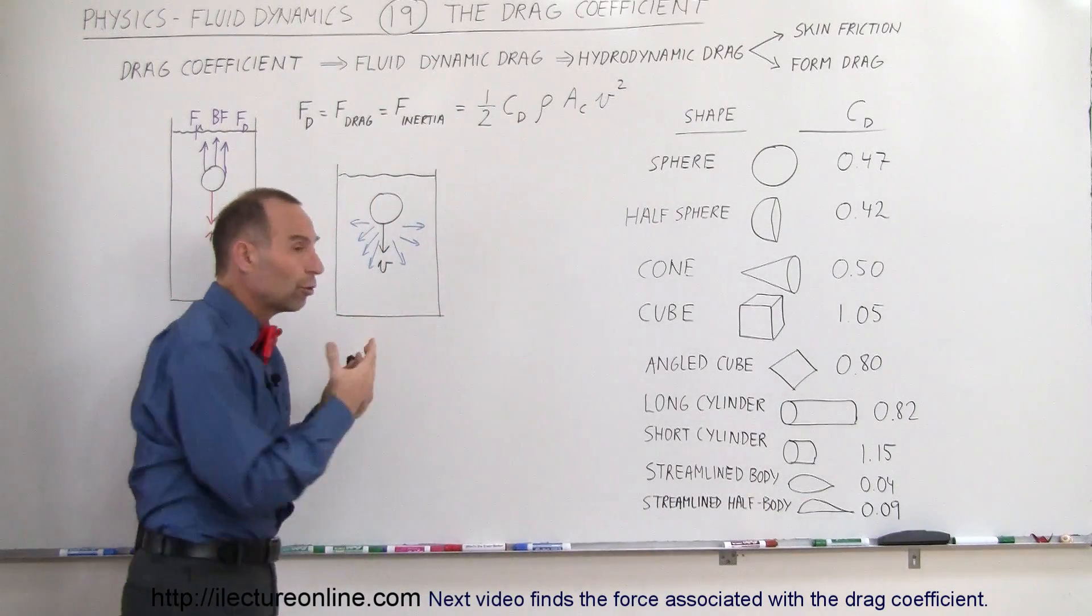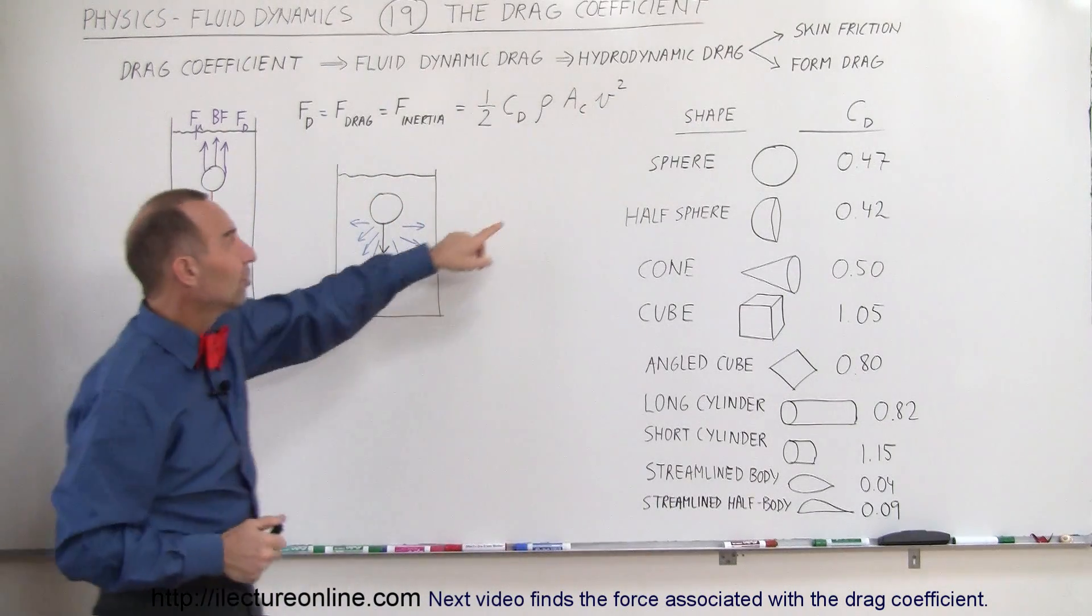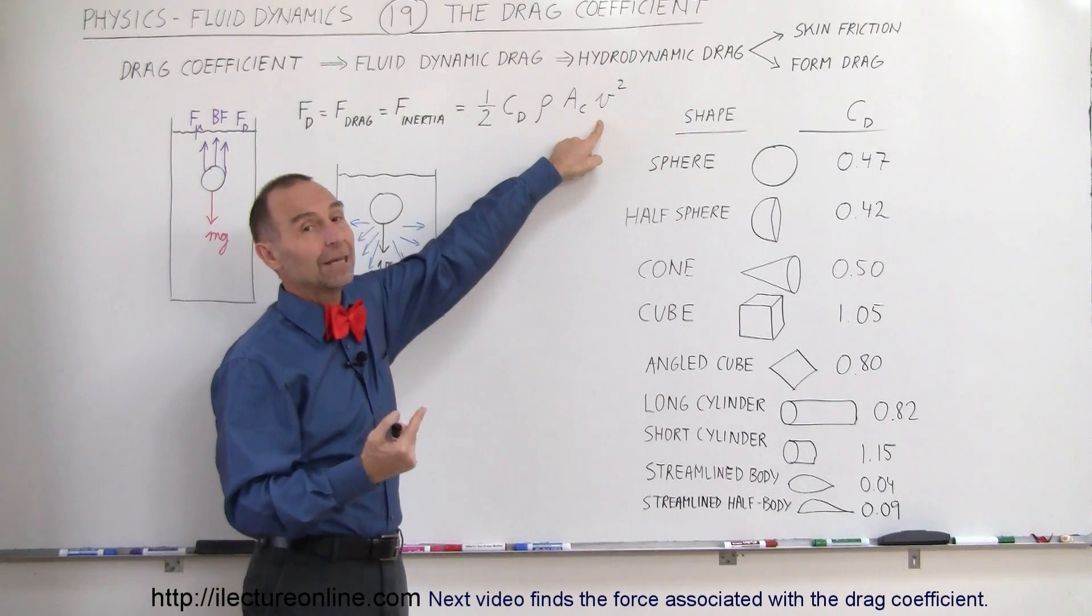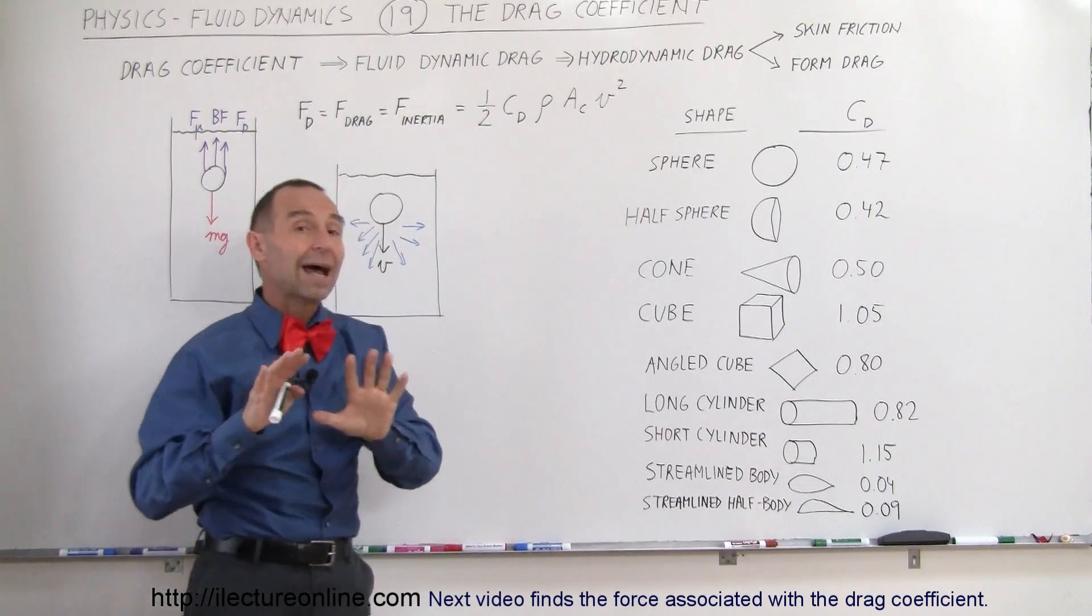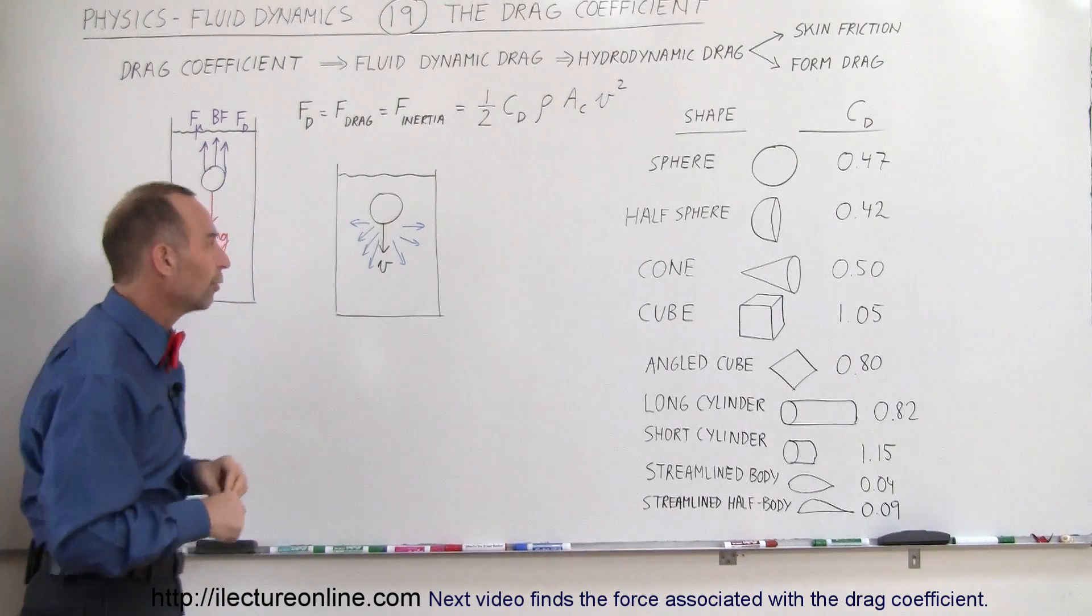So you see that the force due to the drag coefficient is amplified by the velocity. It's the velocity squared, so you double the velocity, you have four times the force associated with the drag coefficient.